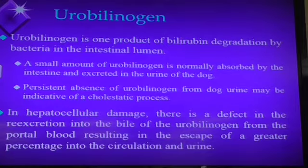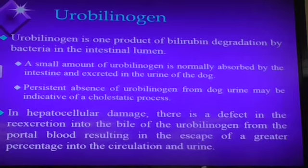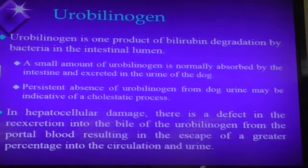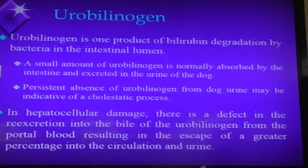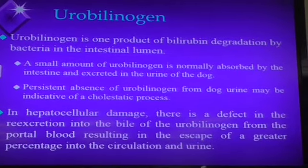However, if we've got an animal that has increased urobilin in the blood, that tells you you've got more conjugated bilirubin going down to the gut, more being converted to urobilin. So that generally means you have an increase in the beginning step — the breakdown of red blood cells — causing this increase in bilirubin all the way through. The absence won't tell you much, but if you have an increase, that's where we get an interpretation.